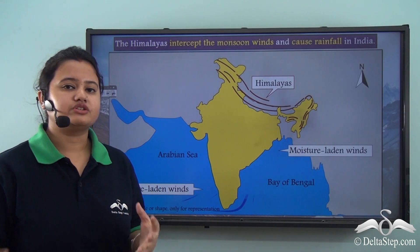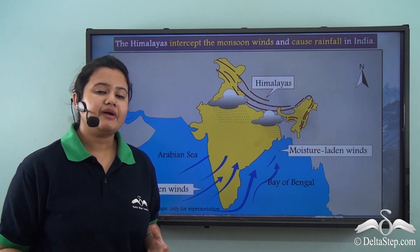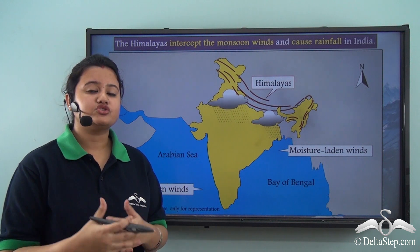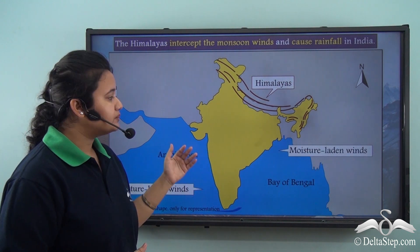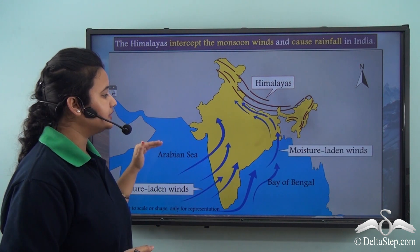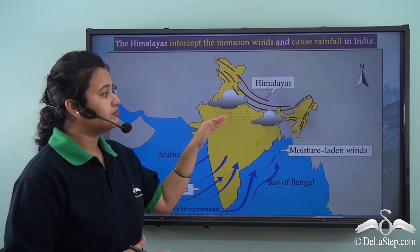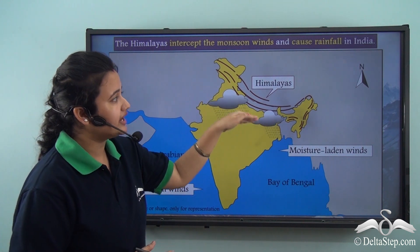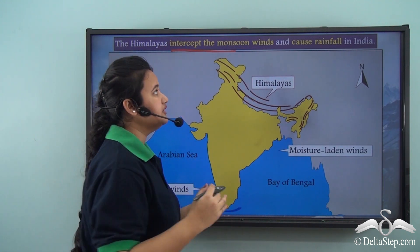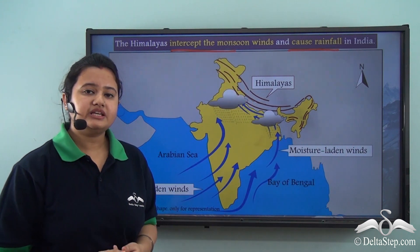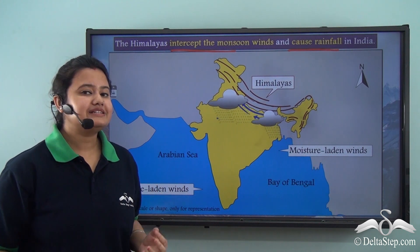Another importance of the Himalayas is that they act as a climatic barrier and play an important role in defining the rainfall pattern in India. They obstruct the moisture-laden winds coming from the Arabian Sea and Bay of Bengal. These winds eventually shed heavy moisture in India after striking the giant Himalayas. So the Himalayas intercept the monsoon winds and cause heavy rainfall in India, having a significant influence on the Indian climate.